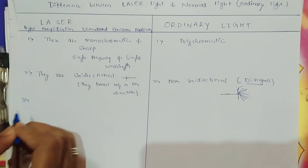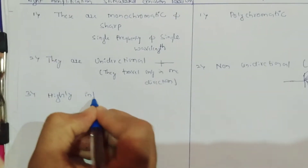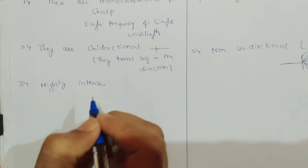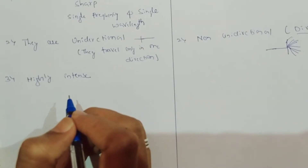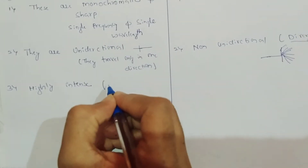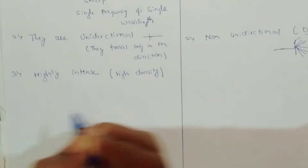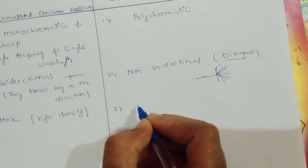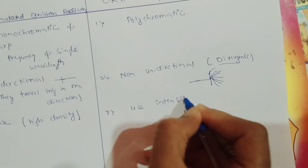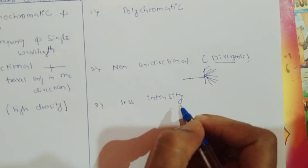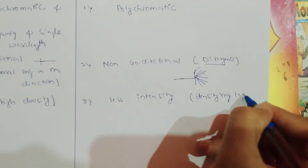The third important property is that laser light is highly intense. High intensity means their density is very high, and because of this high density their intensity is very high. In the case of ordinary light, they have less intensity, which is due to their density being very less.